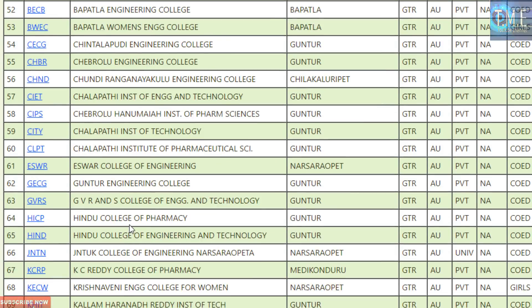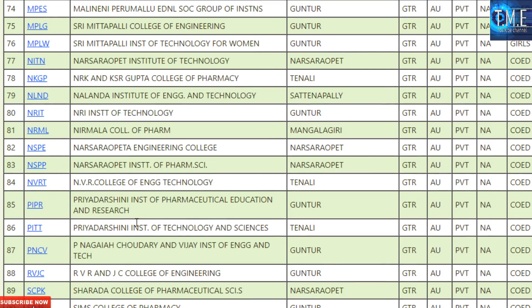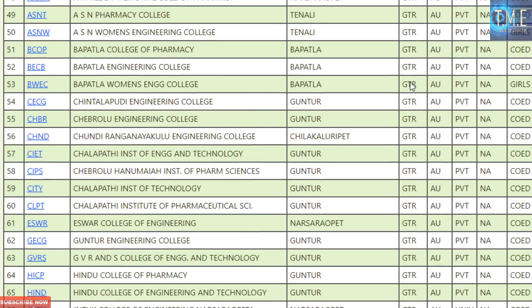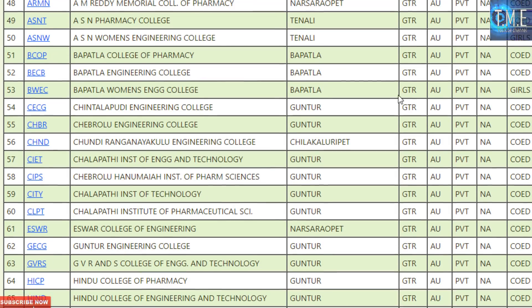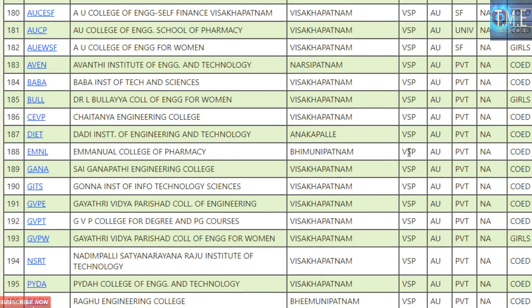If you check the district and call your district, you can get a list of different colleges. There is a district column. The district column is 171, which you will check. In the area of the district, it is called co-education.